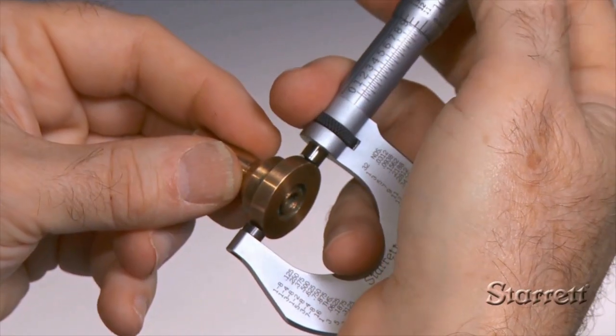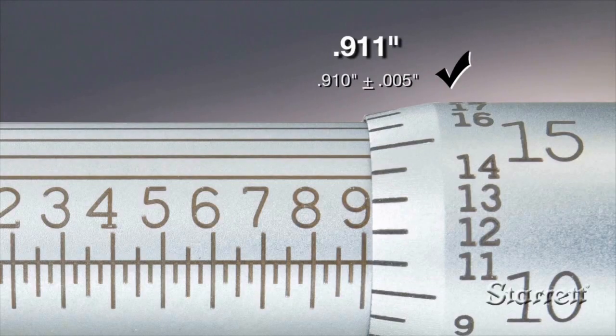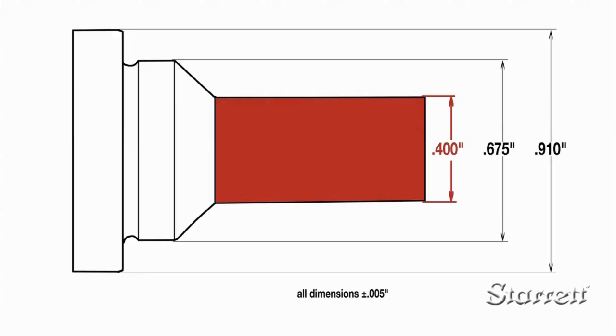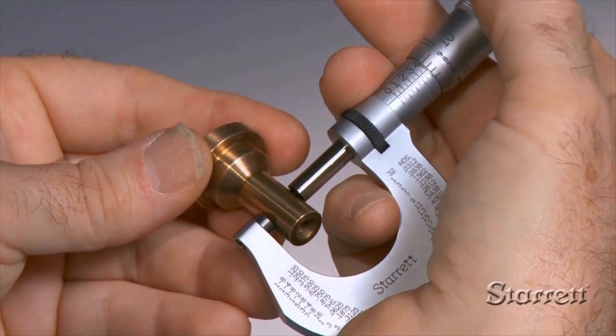With a little practice holding the micrometer in part, turning the spindle with just the right amount of force, and interpreting the information on the thimble and sleeve, you'll be able to make an accurate, reliable measurement every time.